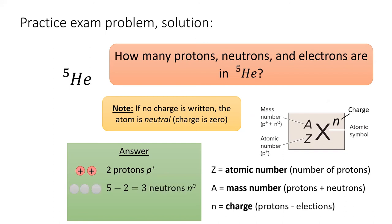Lastly, the charge of the atom is given by protons minus electrons. Since no charge is written for this atom, it has a neutral charge. The number of protons equals the number of electrons, two.